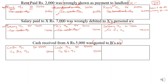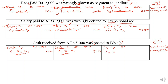We need to rectify only the credit entry since both debit sides are cash account and are correct. When rectifying the credit entry: the correct credit will again be credited — so to A's account — and the wrong credit will be debited — so B's account debit. The rectifying entry is: B's account debit to A's account, rupees 5,000.